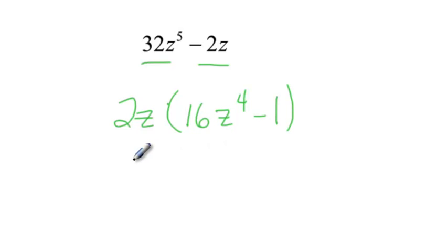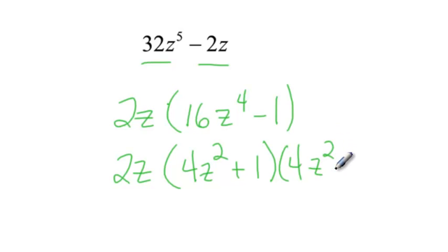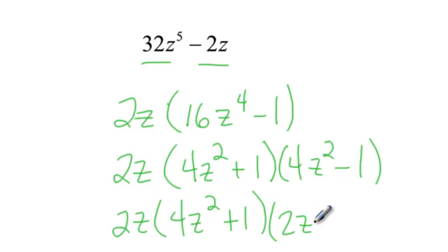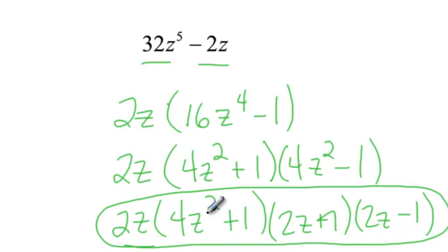Now, this is like a difference of special squares, which is going to give me 4z squared plus 1 and 4z squared minus 1. And I say, okay, well, that can't be factored anymore, that can't be factored anymore, but the 4z squared minus 1 can. So let's go ahead and write down the first two again. 4z squared plus 1. And then this becomes 2z plus 1 and 2z minus 1. That is now factored completely, and that's a doozy of a problem.